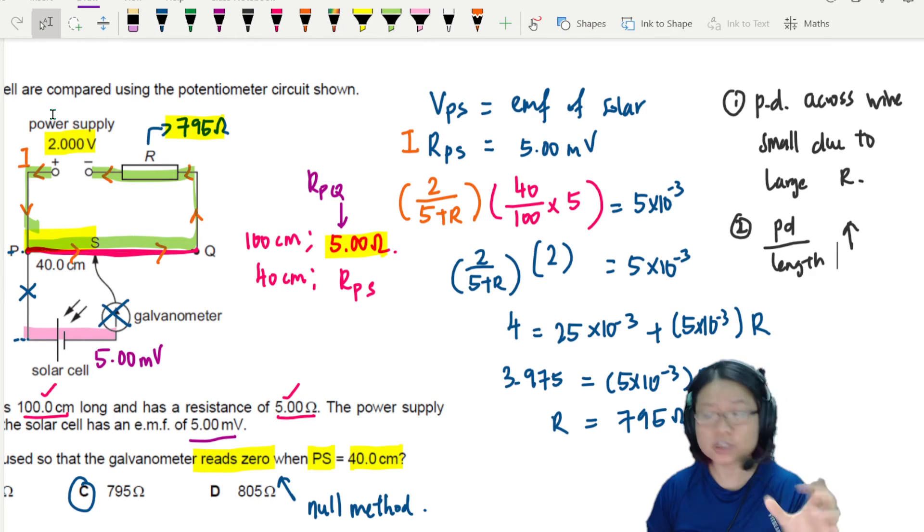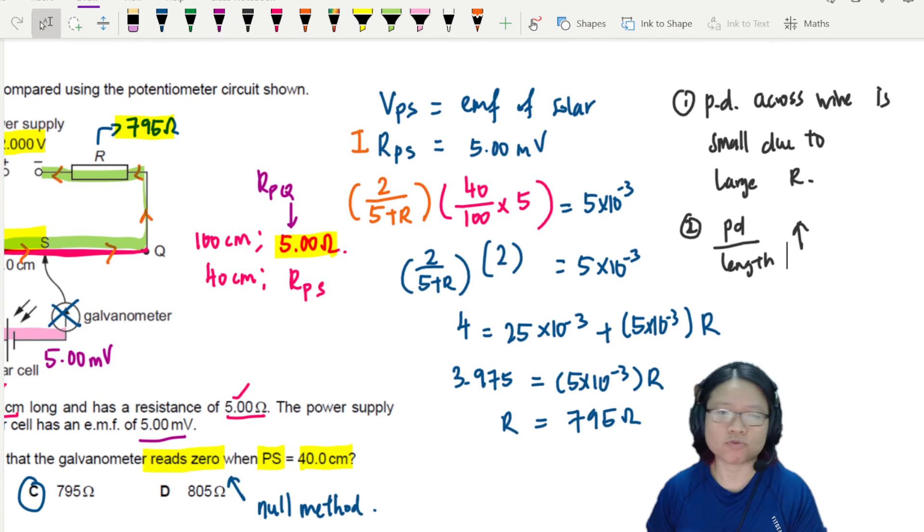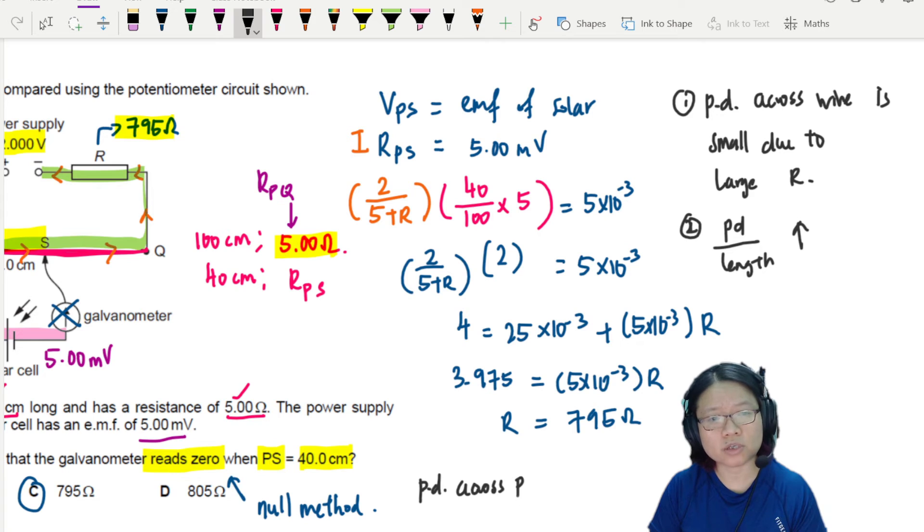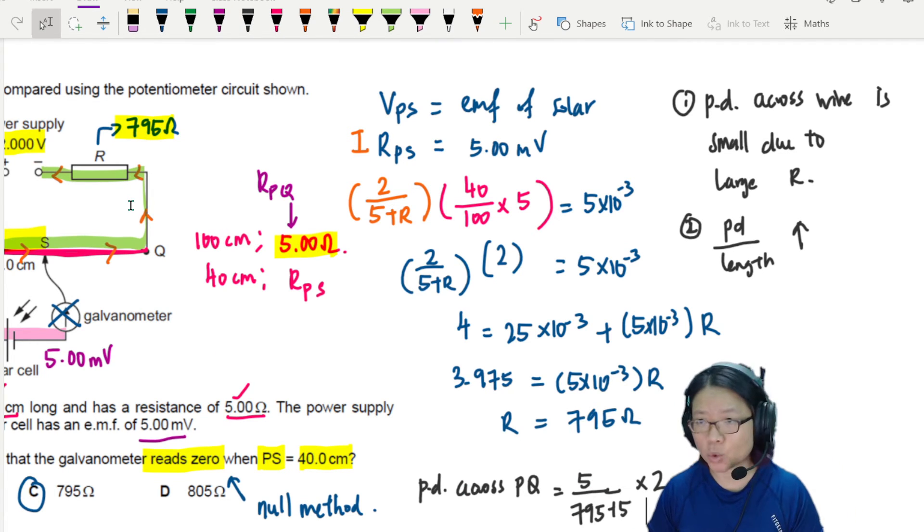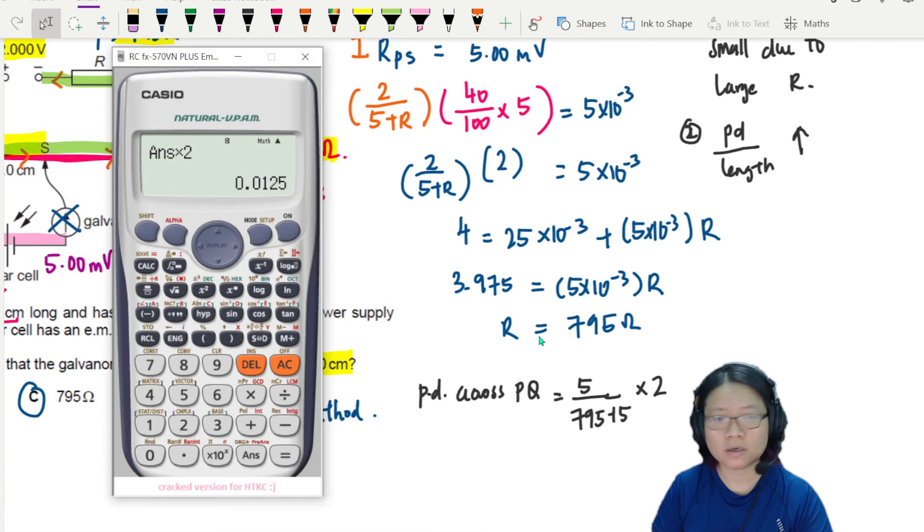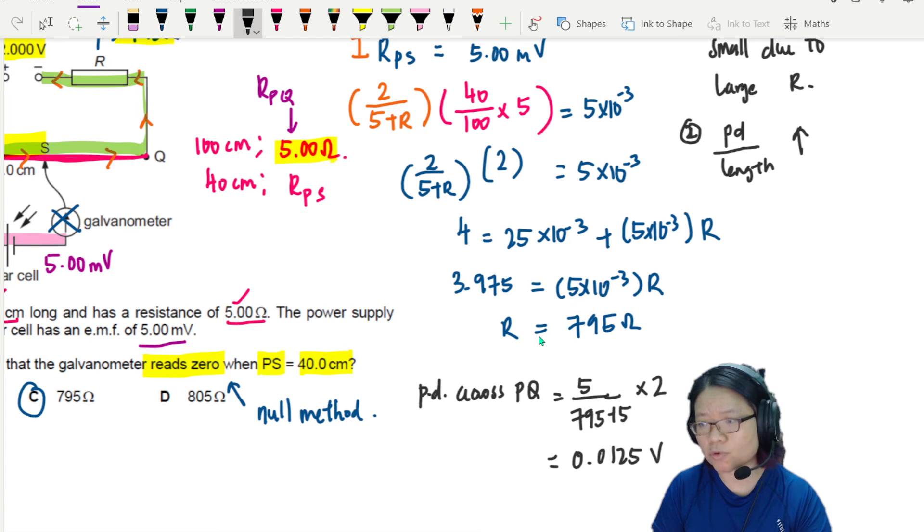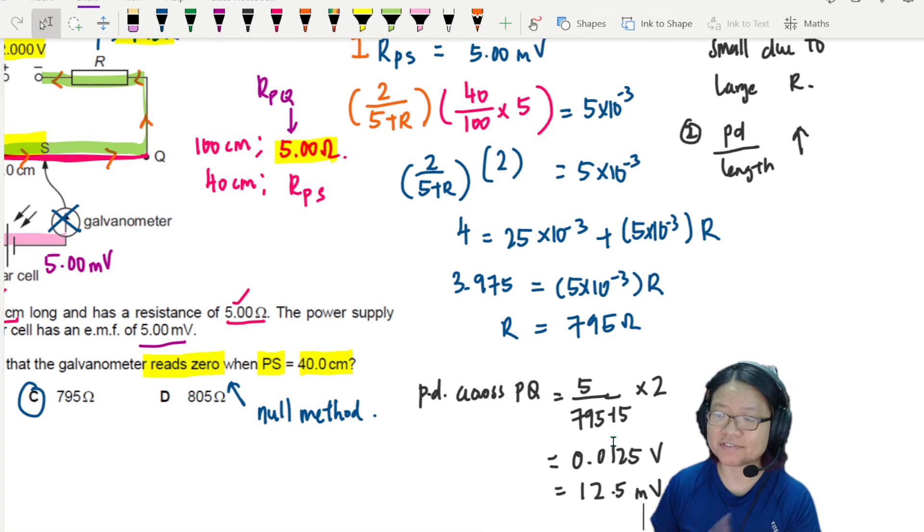So when the potential is small, number 2, the potential difference per unit length is greater. For example, instead of having 2 volts spread out over 1 meter, now I have much less than 2 volts. If you want to, you can calculate. Let's say I want to find the potential difference PD across PQ. You can always use the ratio method by taking 5 over 795 plus 5, multiply by 2, because 2 is being shared between 795 and the wire. If I do this, what I'll get is 0.0125 which is also equivalent to 12.5 millivolts. I'm measuring a 5 millivolt battery, so 12.5 is enough.